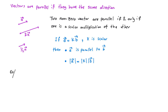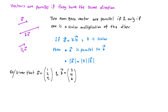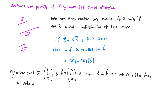Now let's look at an example. We're given vector a with x-coordinate 1, y-coordinate 2, and z-coordinate t, and vector b with x-coordinate s, y-coordinate 4, and z-coordinate 6. We're told that vector a and vector b are parallel — find the missing values t and s.